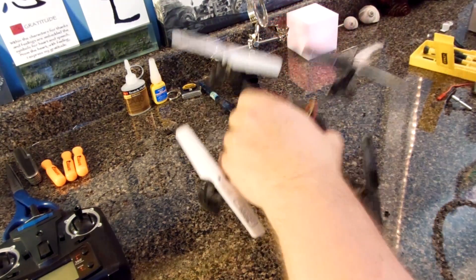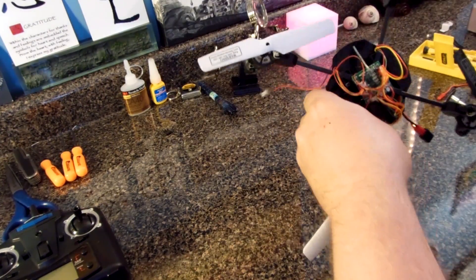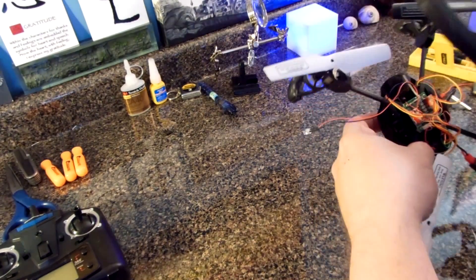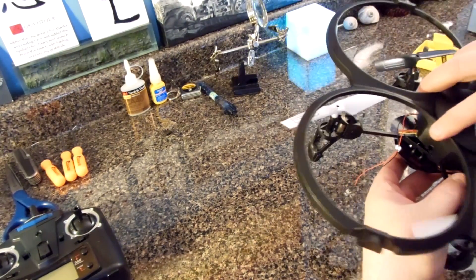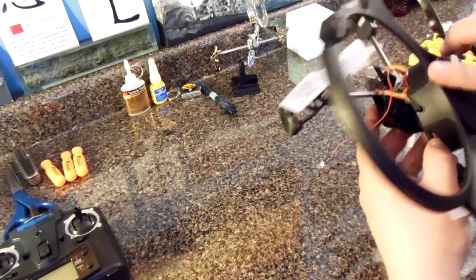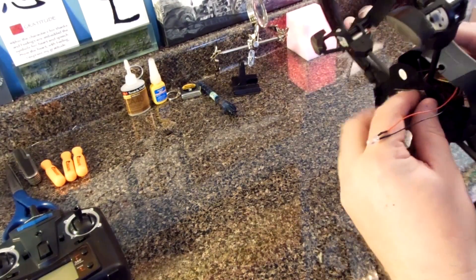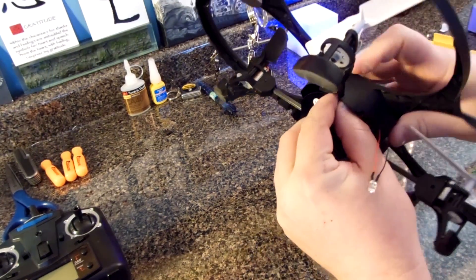Now reinstall the prop guard onto the metal frame. Again, be sure to position the white LED light on the same side as the two white props. Also be careful not to pinch or damage any of the wires.